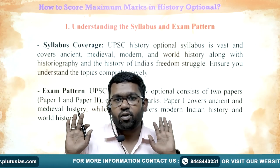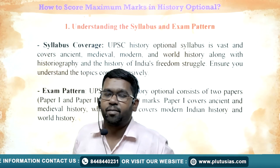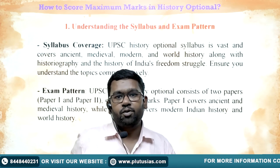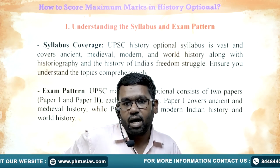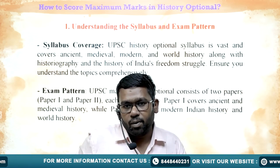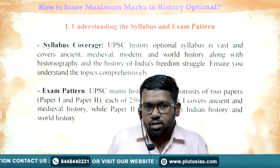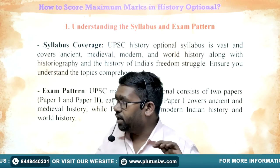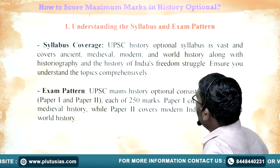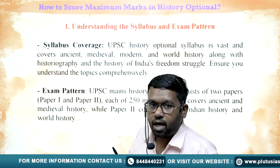The first stage is understanding the syllabus and exam pattern. History Optional Examination is of 500 marks, divided into two papers. Paper one covers Ancient India plus Medieval India and is of 250 marks. Paper two covers Modern India plus World History, including art and culture, and post-independent India. We should understand the syllabus and exam pattern — that is the first step.